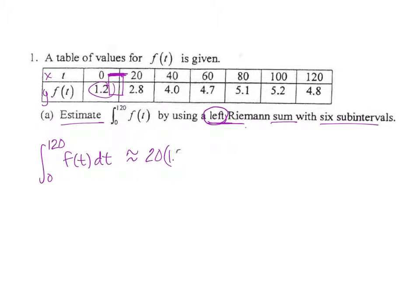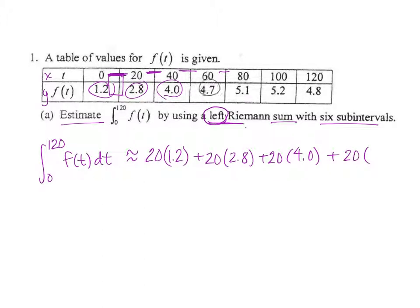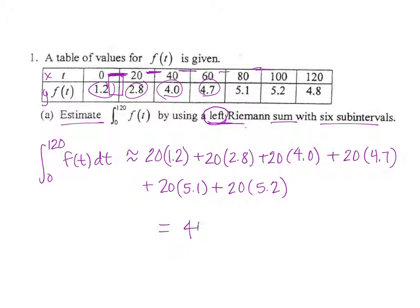So we have: 20 times 1.2, plus 20 times 2.8, plus 20 times 4.0, plus 20 times 4.7, plus 20 times 5.1, and finally 20 times 5.2. That is the setup for the left Riemann sum, and when you number crunch all of that, you should get 460.